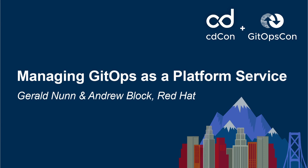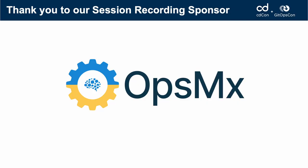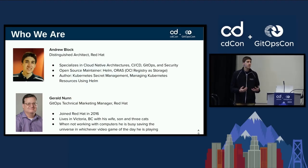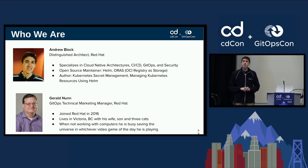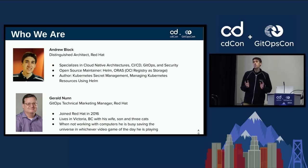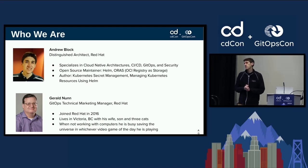Welcome to our session today: GitOps as a Service. My name is Andrew Block. I'm a distinguished architect from Red Hat. I specialize in a number of different areas, everything from cloud-native architectures, CSED, GitOps, and security. I'm an open-source maintainer on the Helm project, as well as Oras, which is OCI registries as storage. I'm also an author — I've written two books in the cloud-native space, one on Kubernetes secrets and one on Helm.